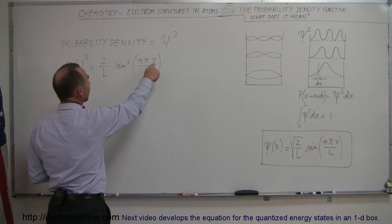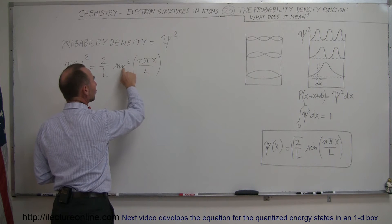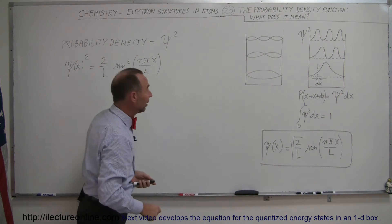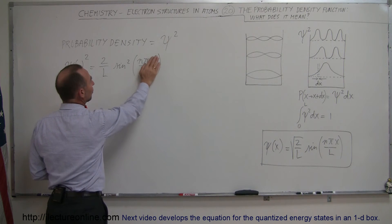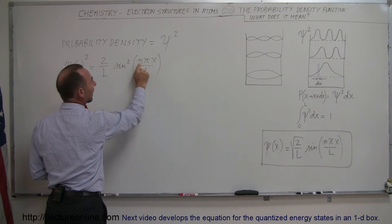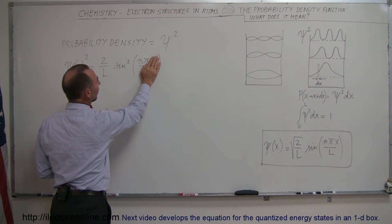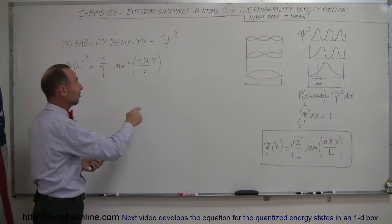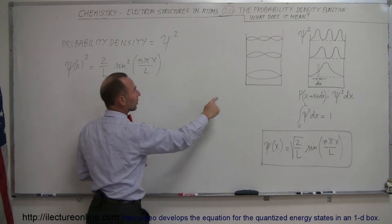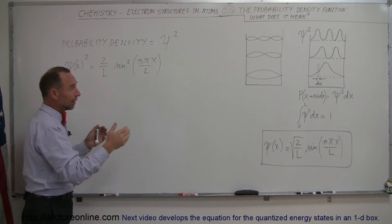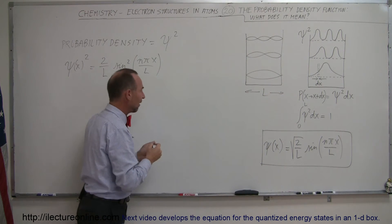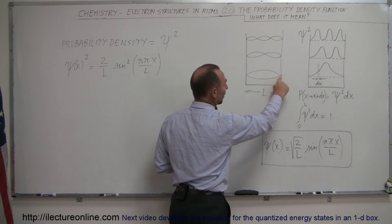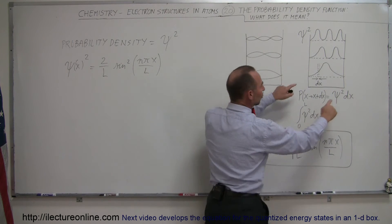Notice that if we put x equal to zero, we get the sine squared of zero. The sine of zero is zero, so there's zero probability of finding the electron at the left edge. If we plug in x equal to L, then L divided by L is one, and we get the sine squared of n times pi. Since n must be an integer — one, two, three — we get sine of pi, sine of two pi, or sine of three pi, all of which equal zero. So there's zero probability of finding the electron at either edge of the box.